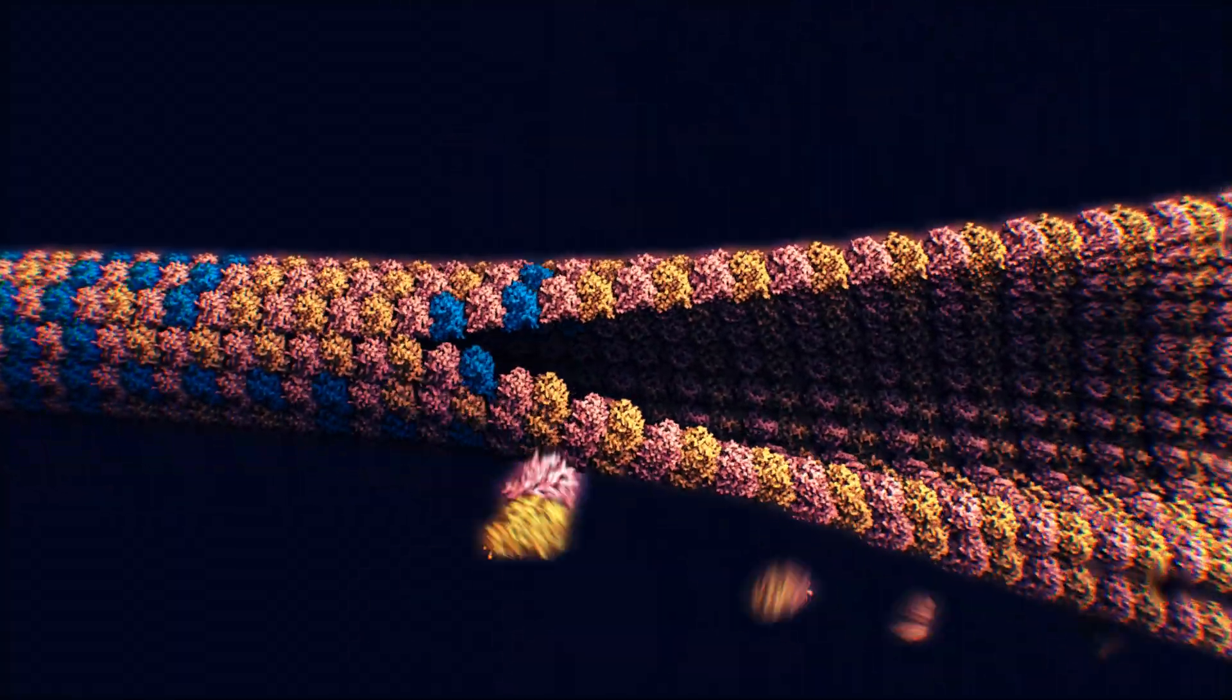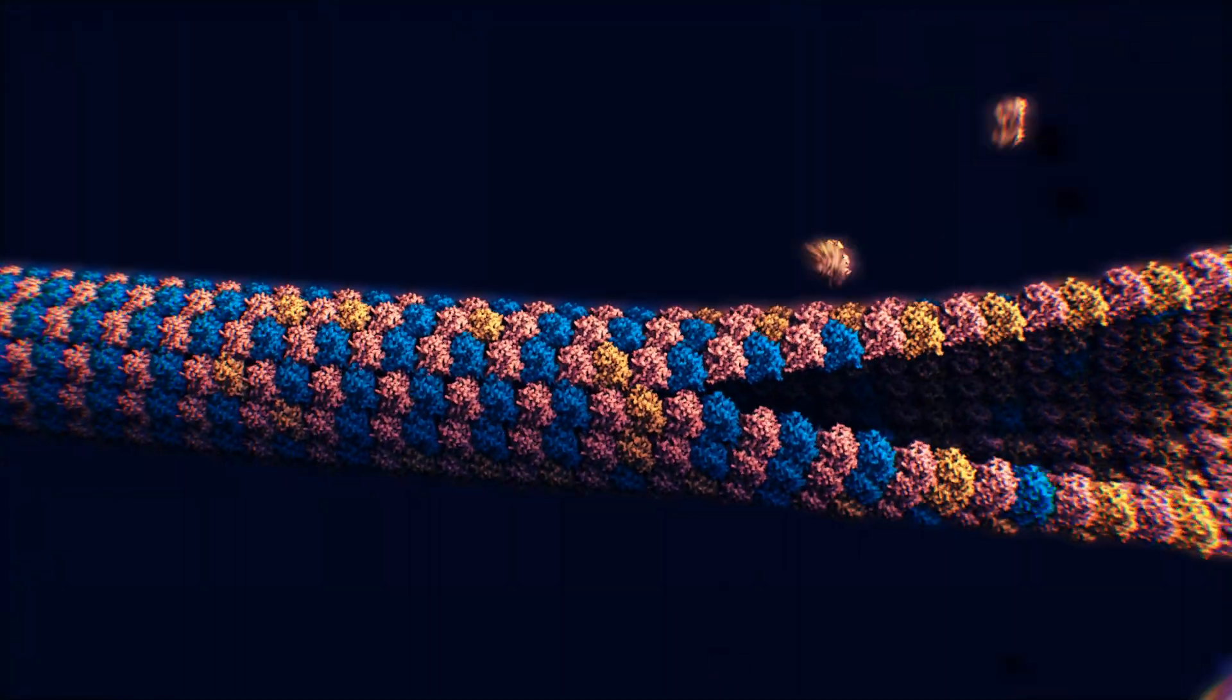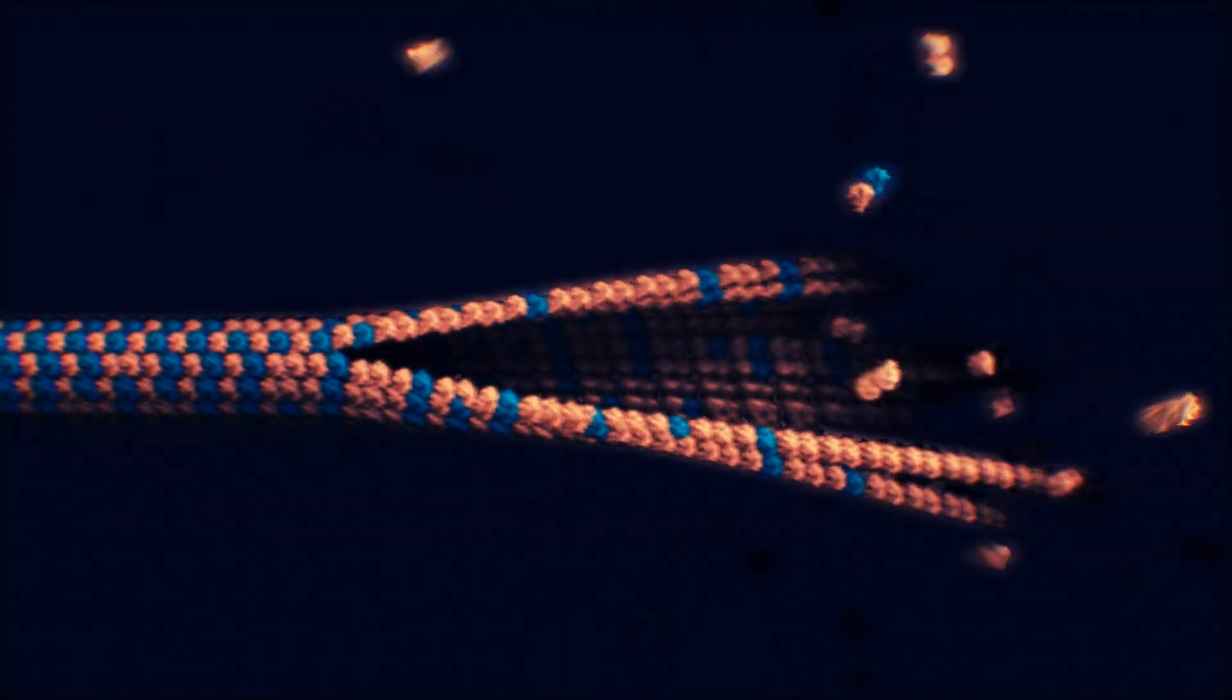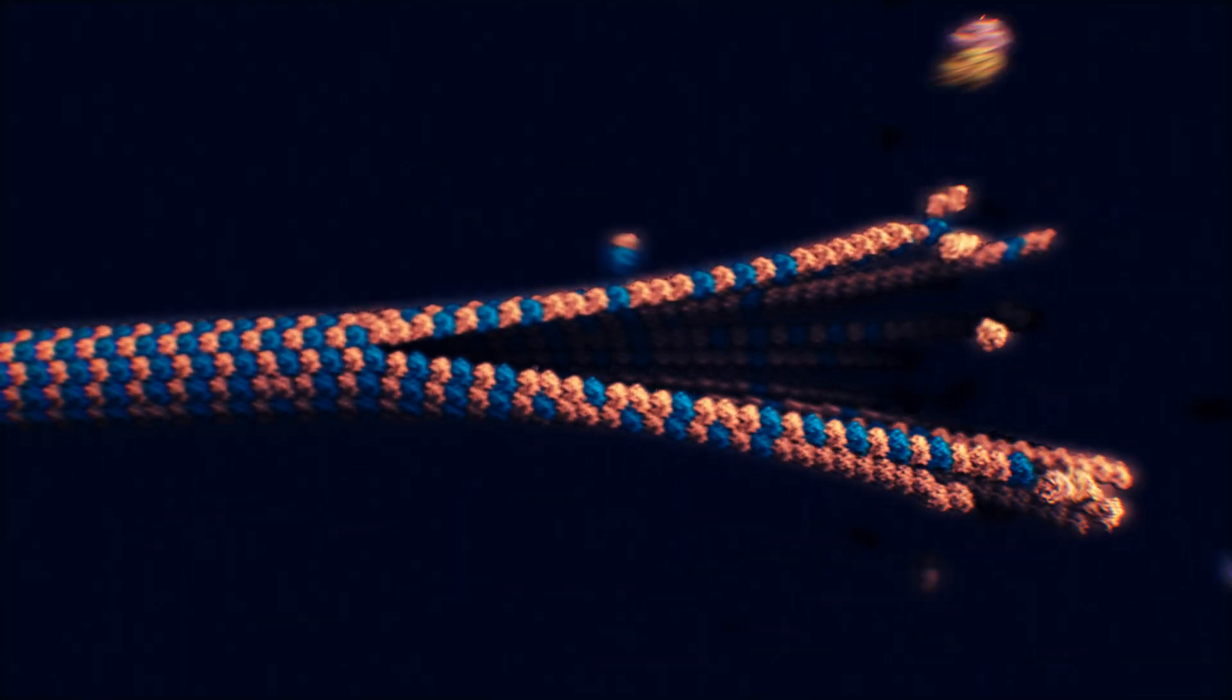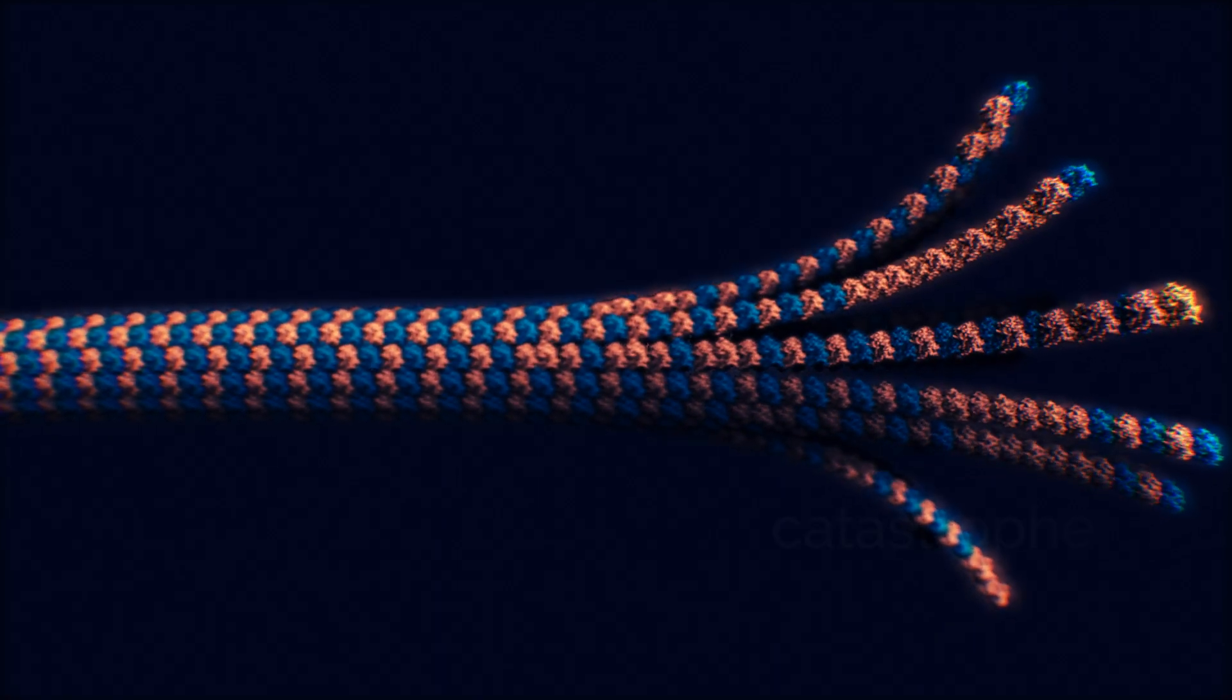The GDP tubulins, highlighted here in blue color, do not form such a stable lattice as the GTP tubulins do. When the hydrolysis catches up with the growing end of the microtubule, the growth stops and the whole structure becomes unstable.